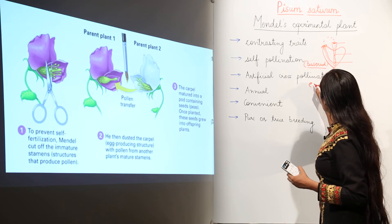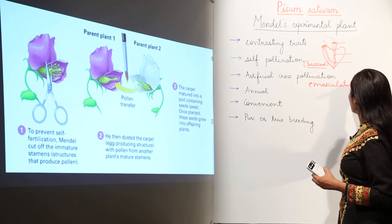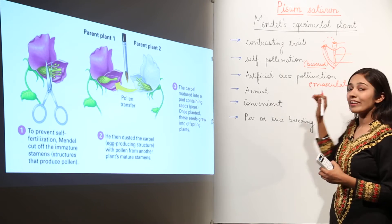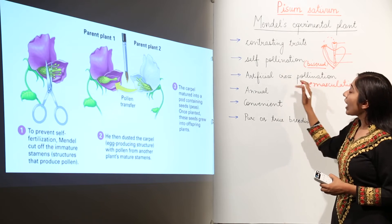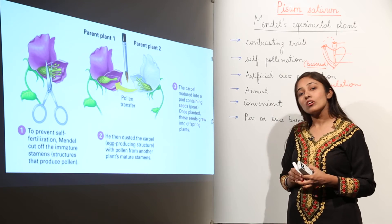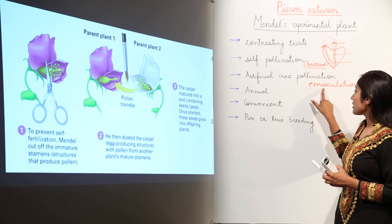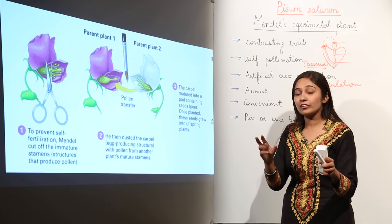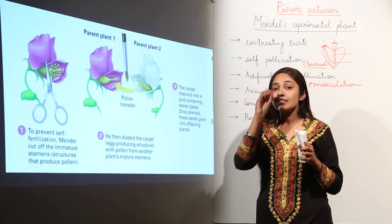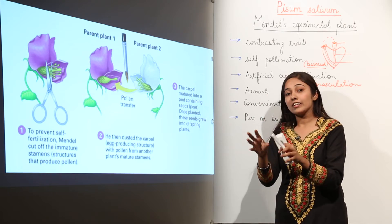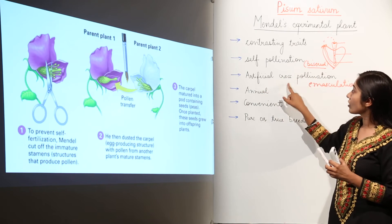This removal of anthers from the flower is known as emasculation. Artificial cross-pollination was easily possible through emasculation, in which Mendel removed the anthers or stamen from the flower and dusted the desired pollen grains onto the flower to achieve artificial cross-pollination.